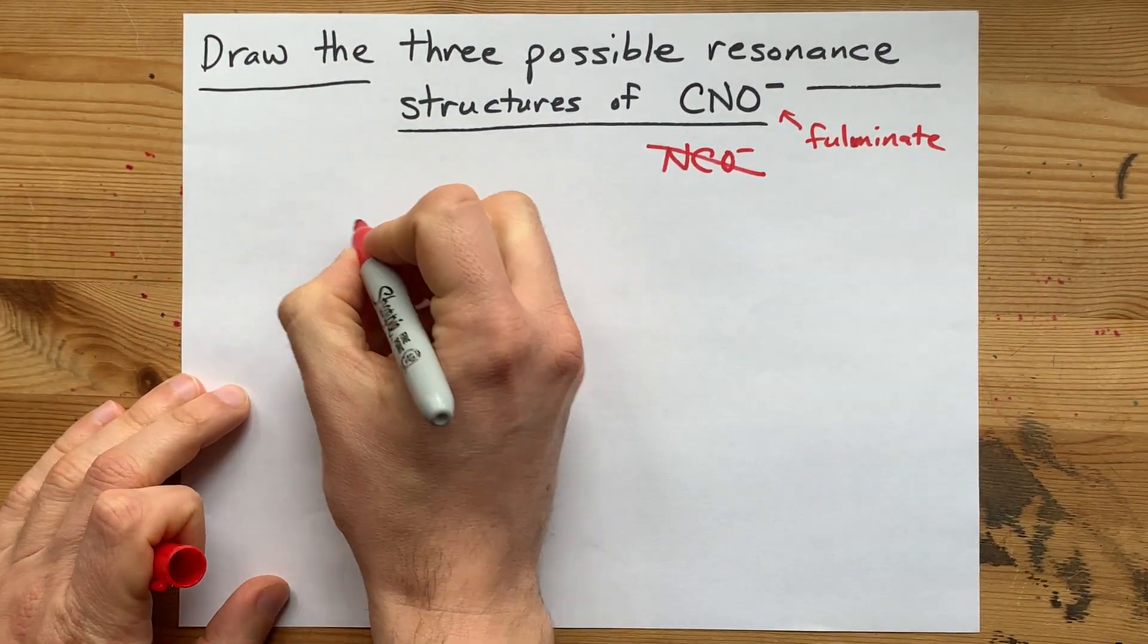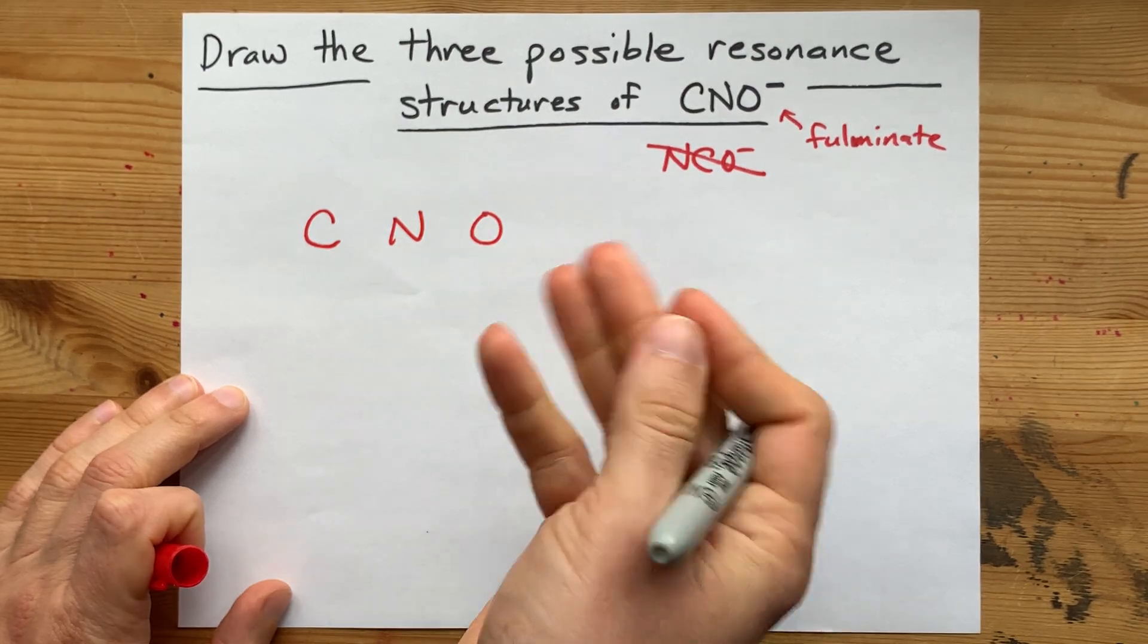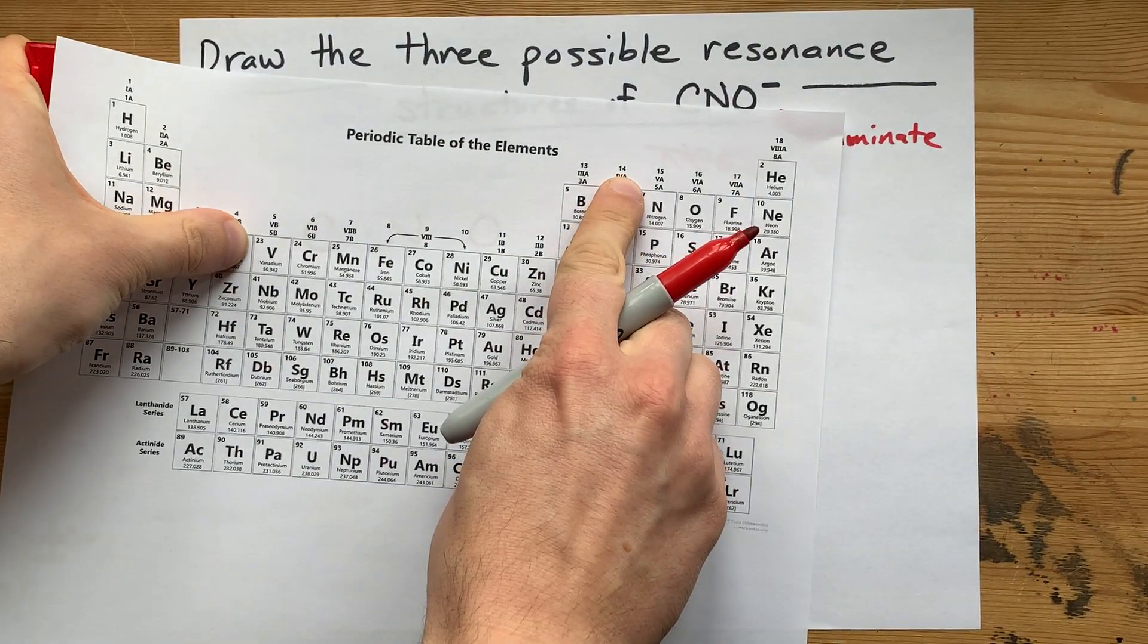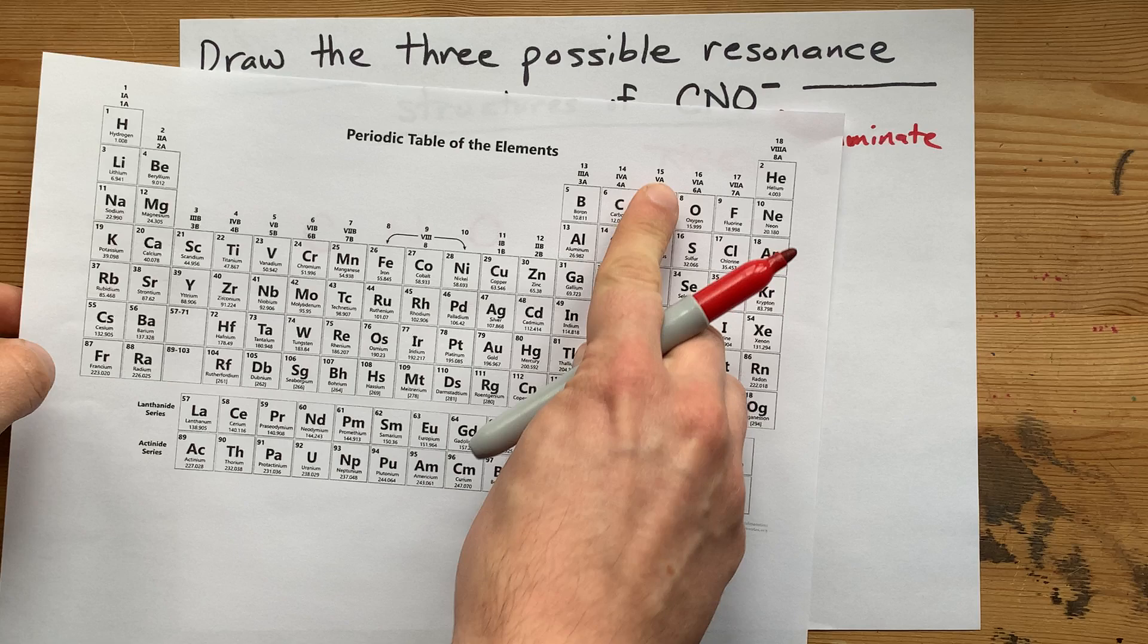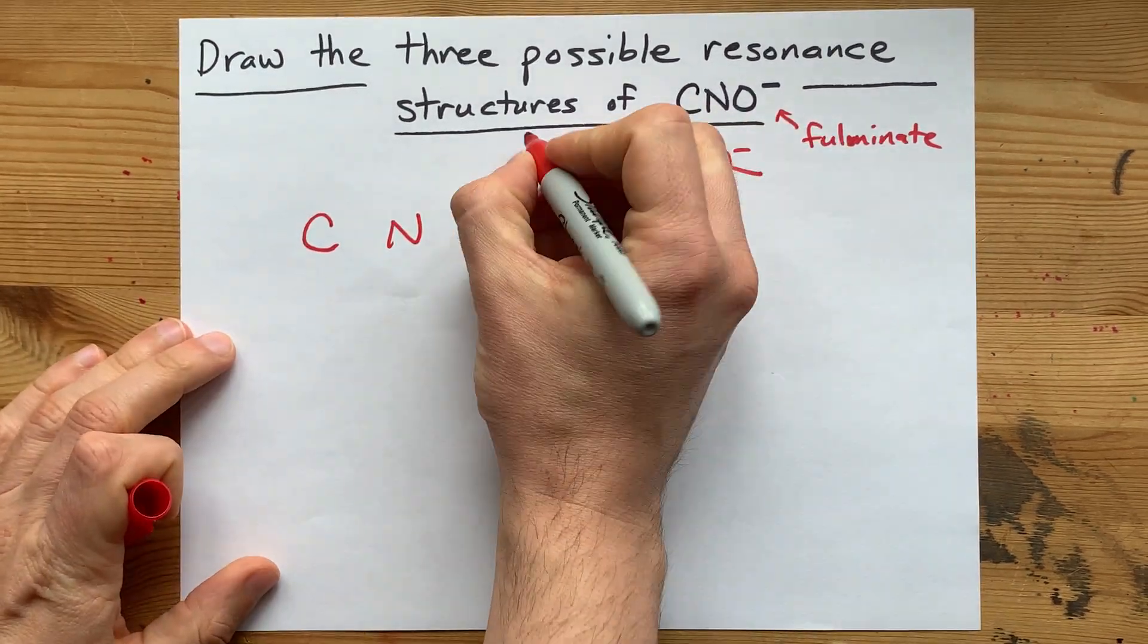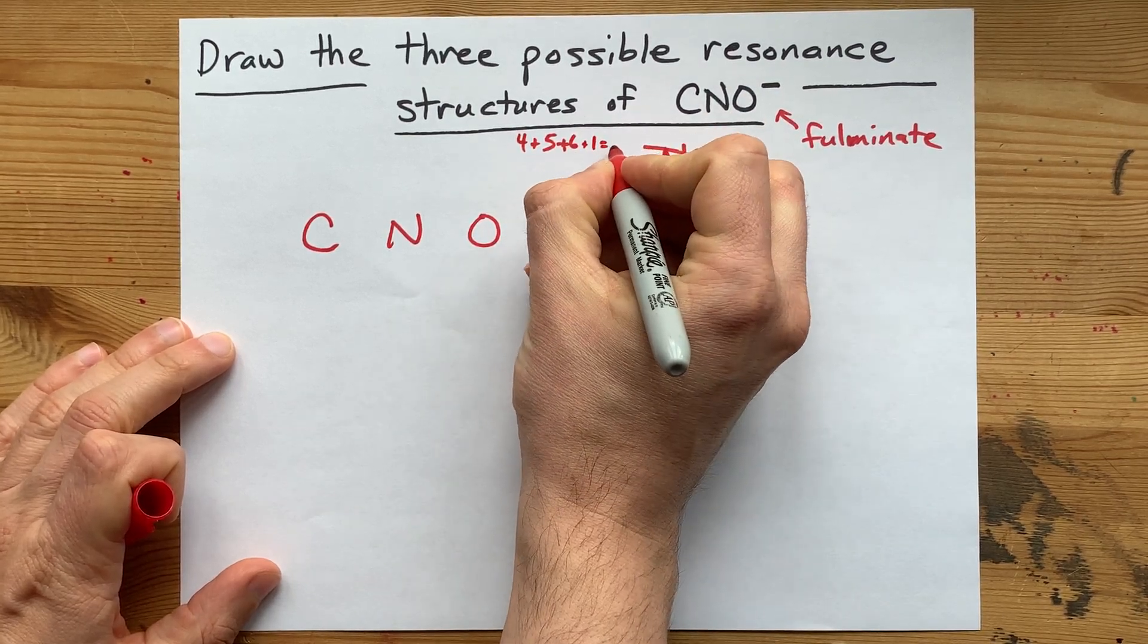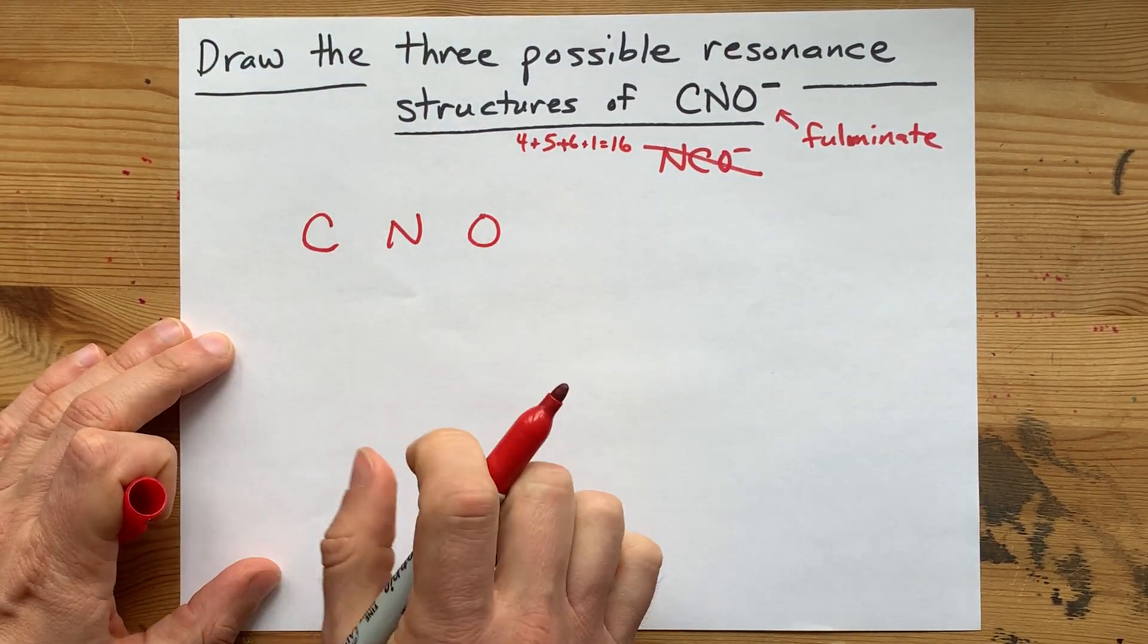So you've got a carbon atom and a nitrogen atom and an oxygen atom in that order. How many valence electrons do you have to deal with here? Carbon is in group 14, and so it brings four valence electrons with it. Nitrogen is in group 15. It brings five valence electrons with it. And oxygen is in group 16. It brings six valence electrons with it. That's four and five and six, and a bonus electron for the minus charge here. That gives you 16 electrons total that you can put into your Lewis structure.